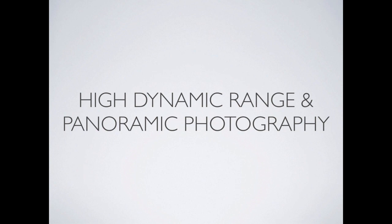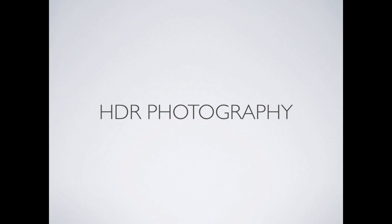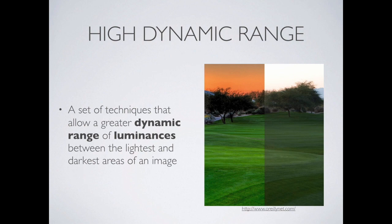Let's start with high dynamic range photography. I'll refer to this both as high dynamic range photography and HDR photography — they're interchangeable. Essentially, high dynamic range is a set of techniques that allow a greater dynamic range of luminances, or light values, between the lightest and darkest areas of an image. That's its technical definition, but let's talk a little more in depth about it.